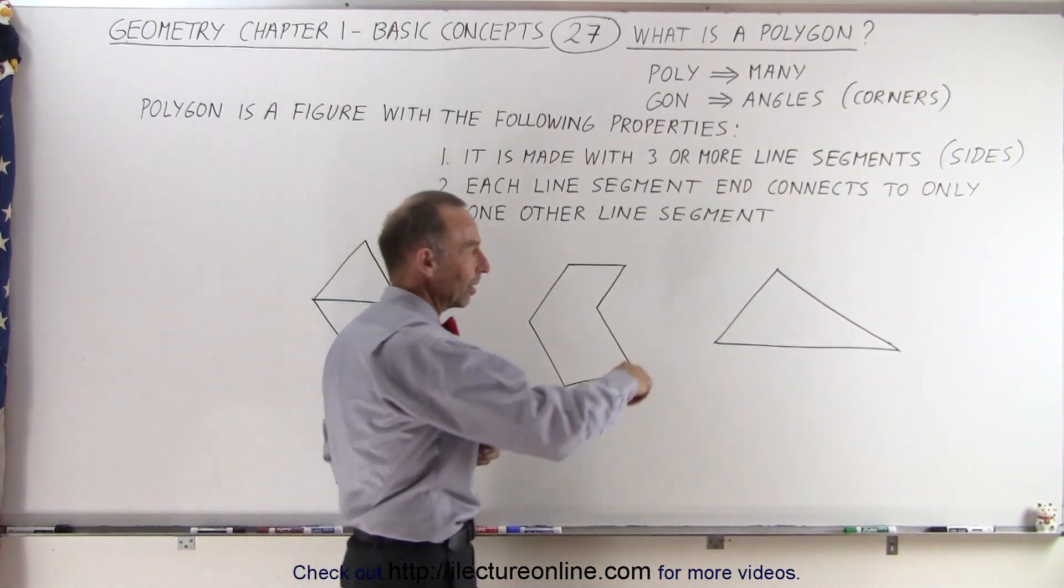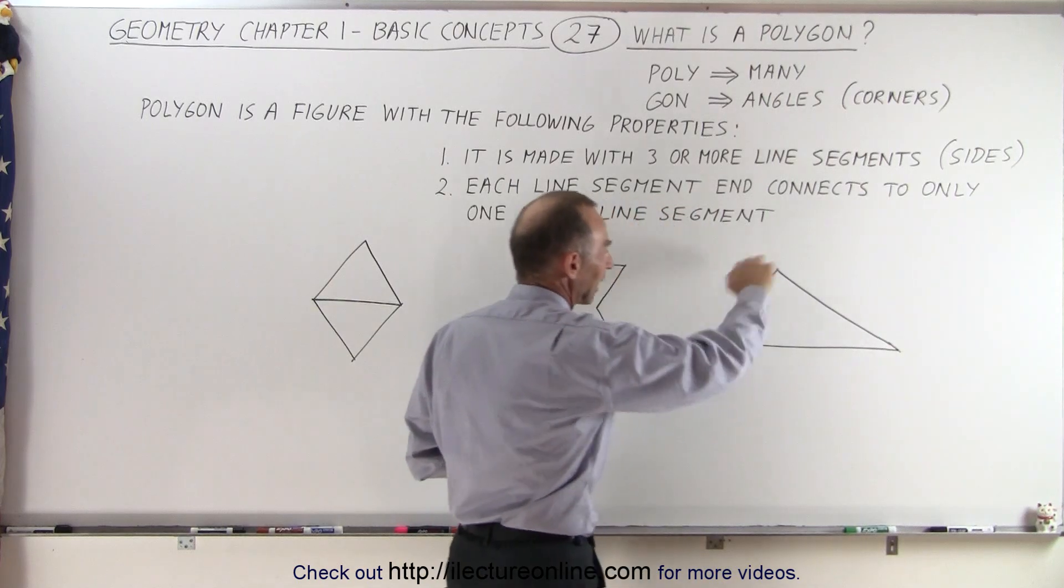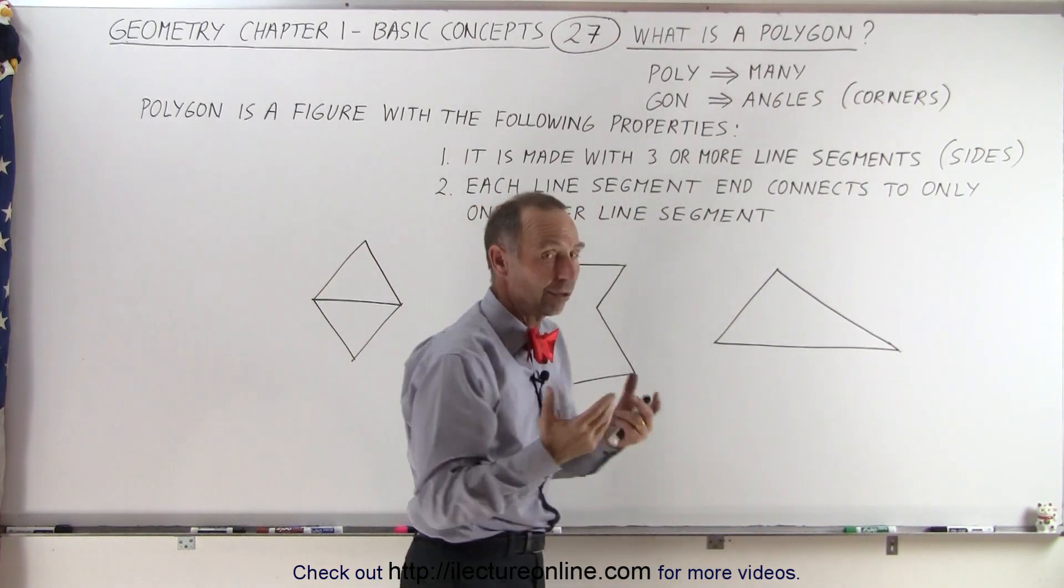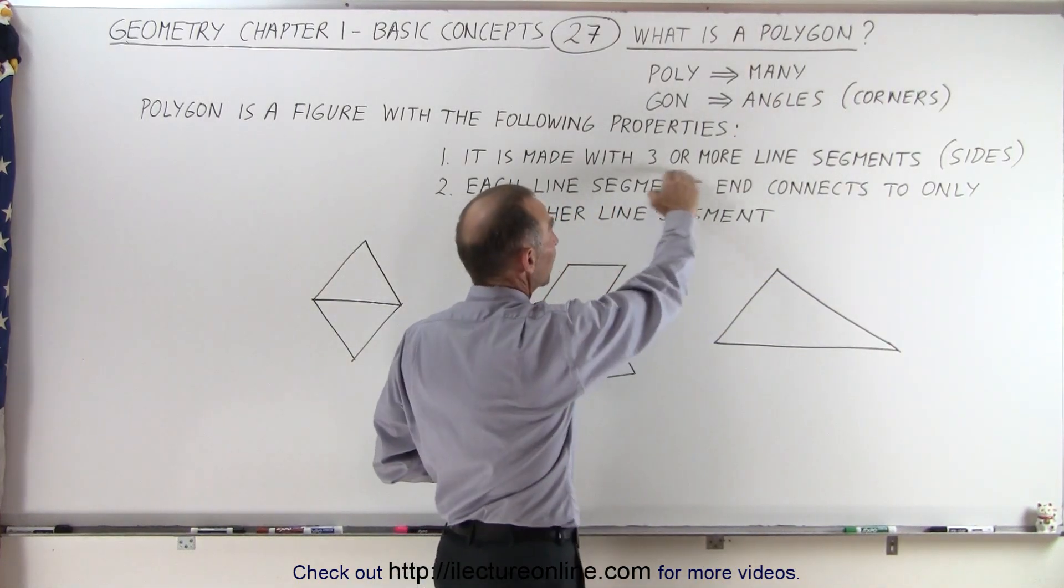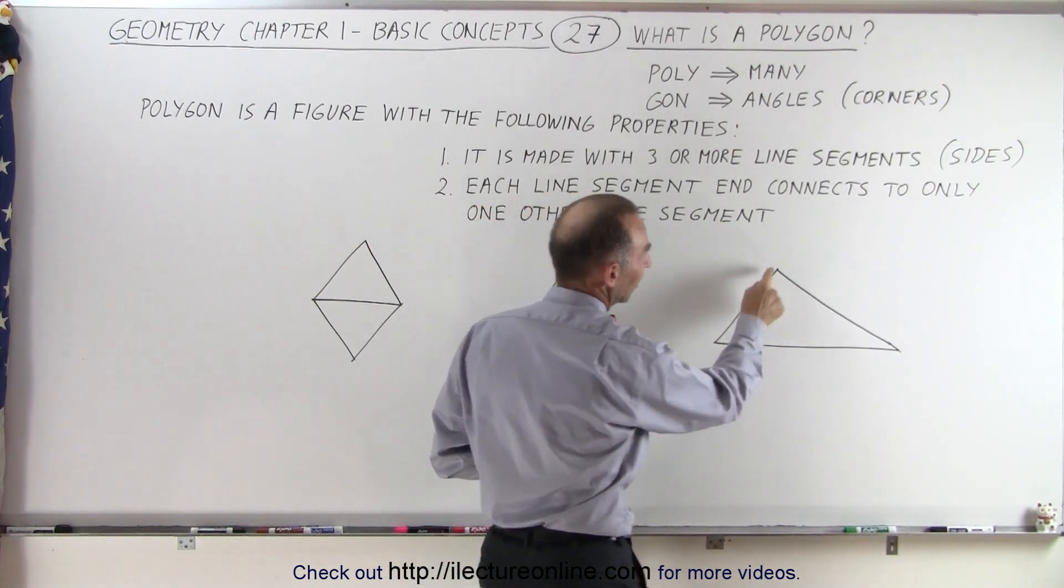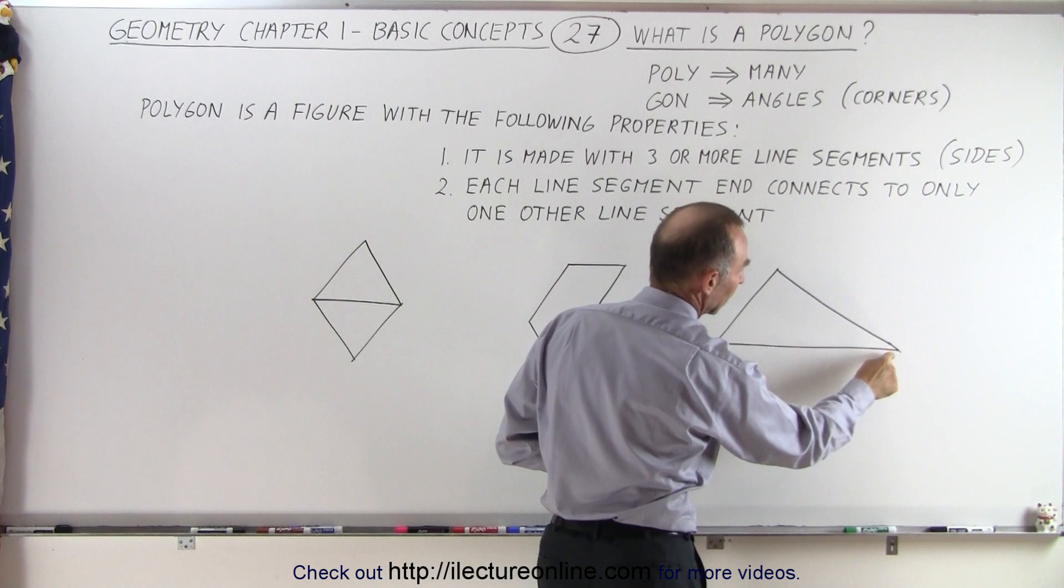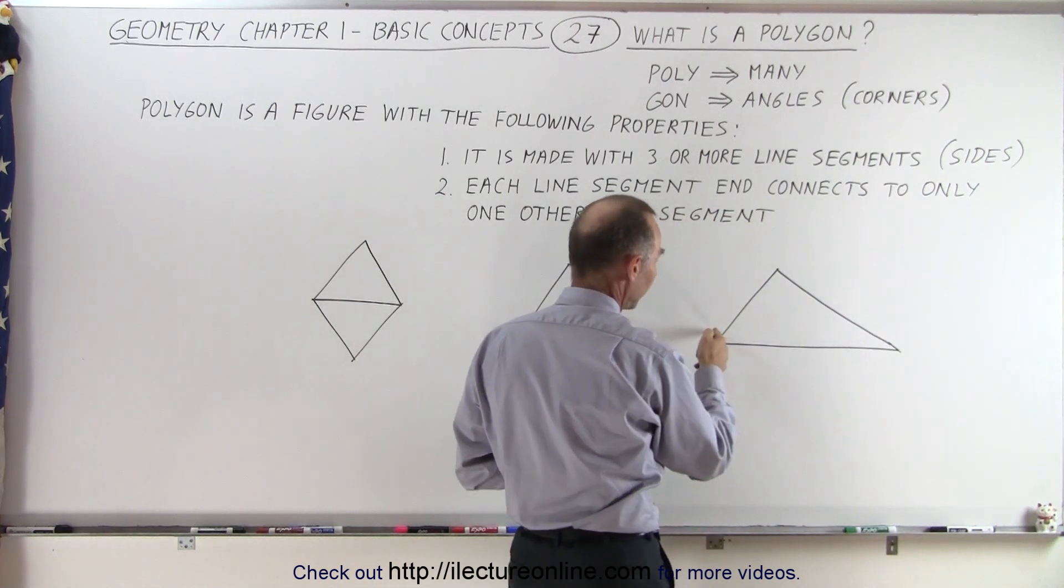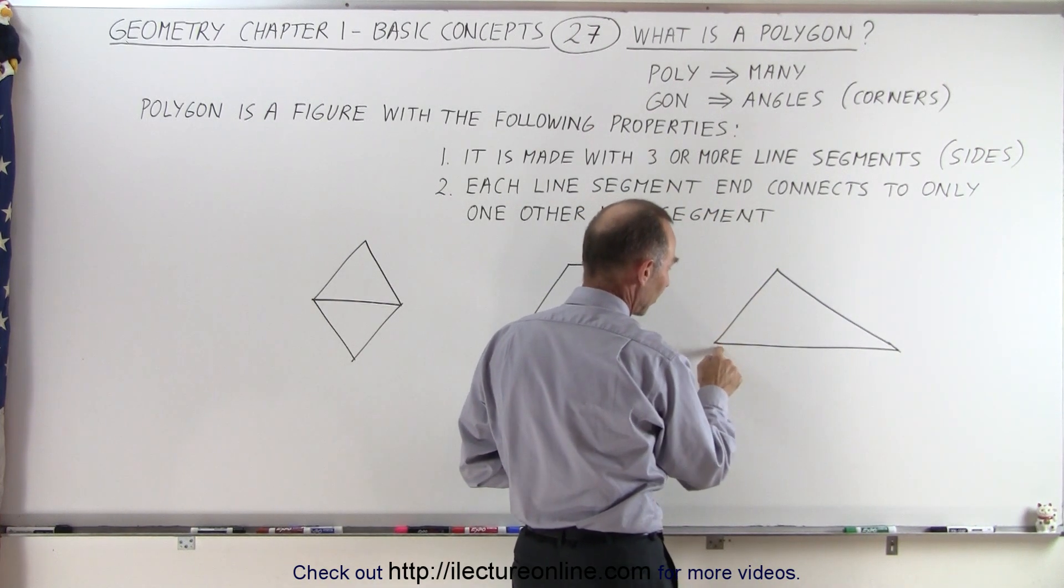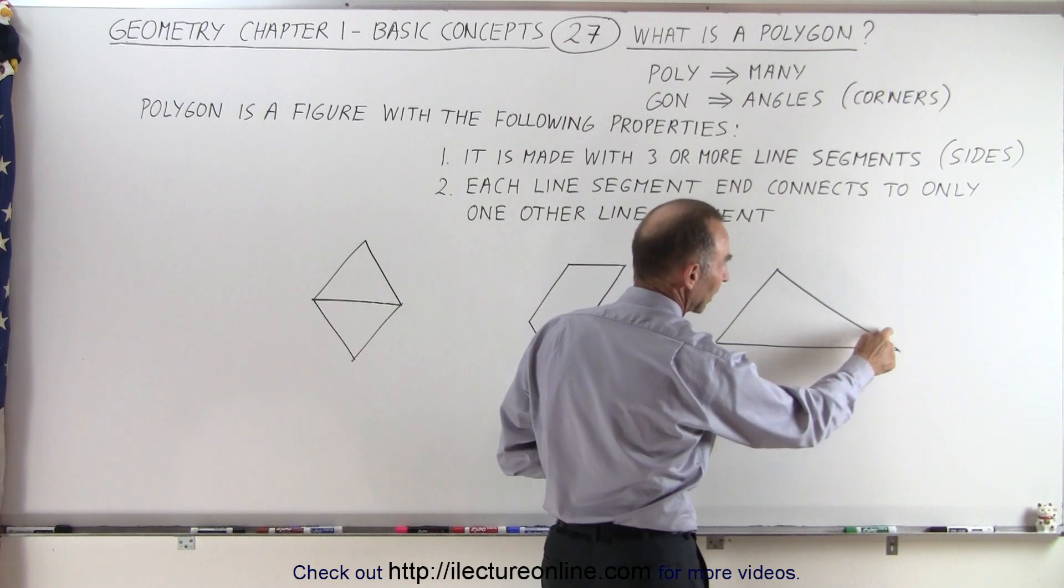So let's take a look at this. This is clearly a triangle. It has three sides, so therefore the minimum of three has been satisfied. And notice that this side here only connects to one other side here and this only connects to one other side there. On this side you can see that this side only connects to this side and here this side only connects to that side.